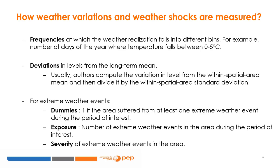We can also count the number of extreme weather events that occurred in an area in the period of interest — for example, the number of droughts an individual experienced during childhood. For some extreme events, we can calculate their severity. For cyclones, we can use the Saffir-Simpson hurricane wind scale, which classifies cyclones into five categories based on wind speed, from category 1 indicating minimal strength between 119 to 153 kilometers per hour, to category 5 indicating maximal strength of more than 252 kilometers per hour.